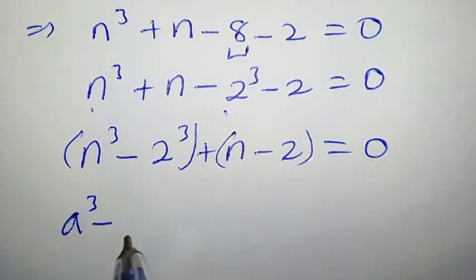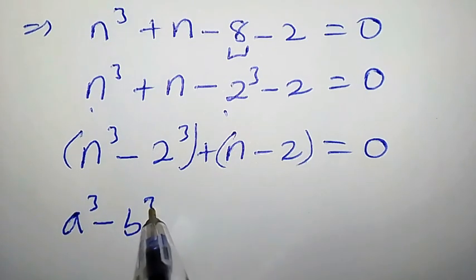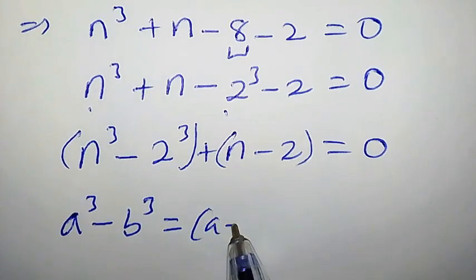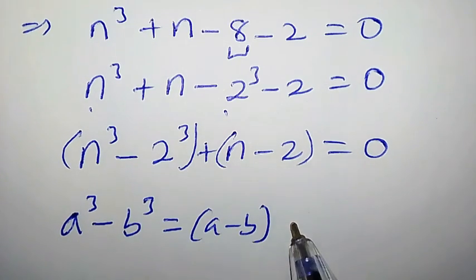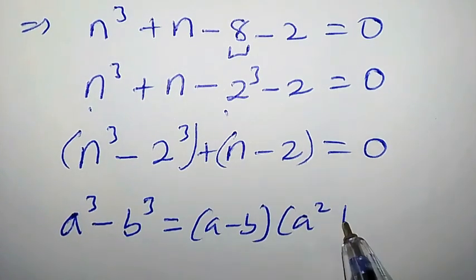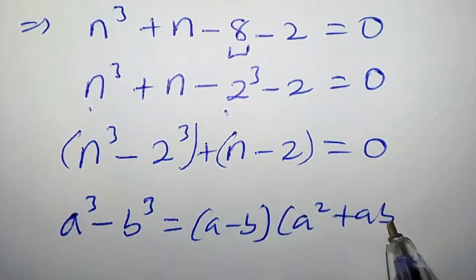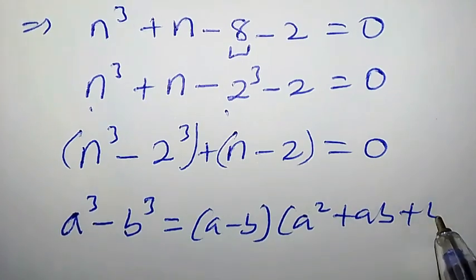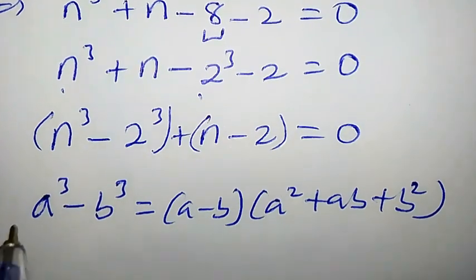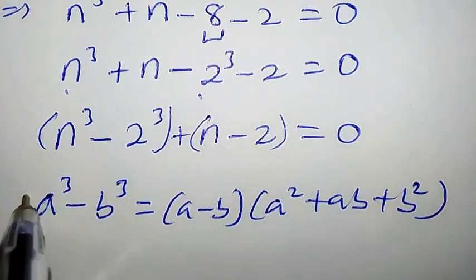Now let us recall the difference of two cubes. If we have a³ minus b³, this is the same as a minus b, times a² plus ab plus b². We are going to apply this property to our expression.